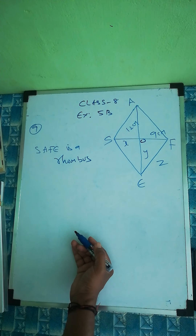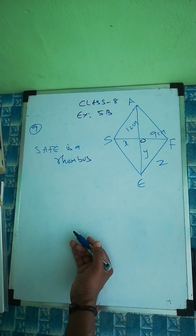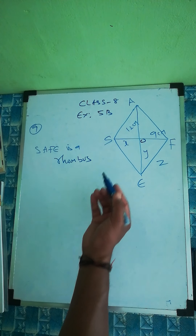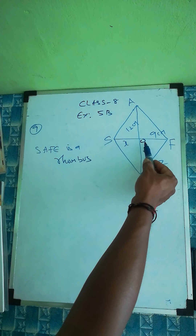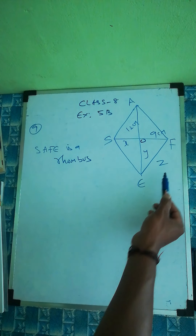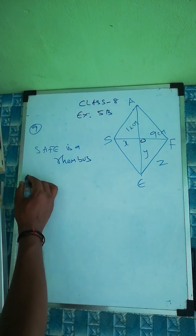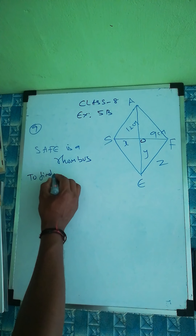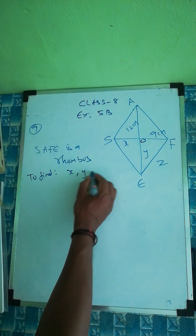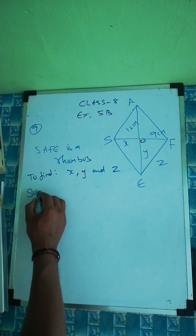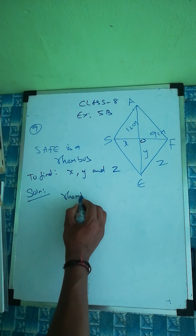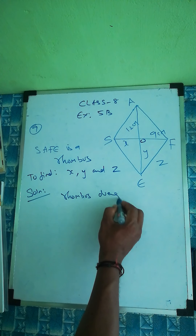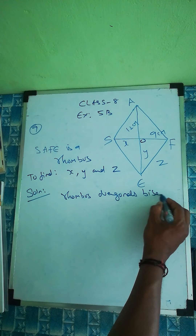Question number nine: In rhombus SAFE as shown in the figure, find x, y, and z and justify your findings. Here AO is given as 12, y is to be found; OF is given as 9, x is to be found; and z is also to be found. We know that the diagonals of a rhombus bisect each other.